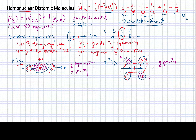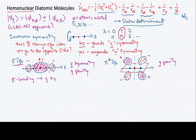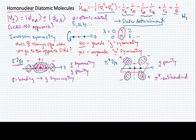This is a useful thing to know: sigma bonding orbitals typically have g-symmetry, and pi anti-bonding orbitals also have g-symmetry.